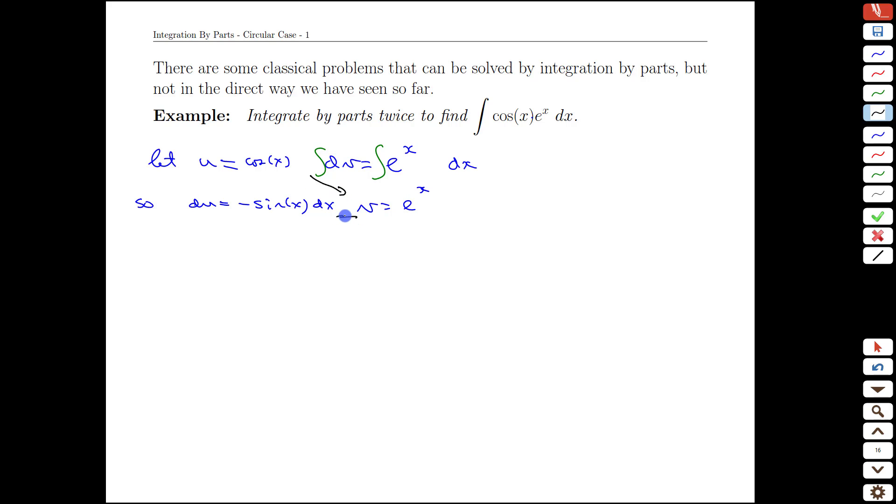Drawing our lines to remind ourselves of the formula. And we call our integral over all I for simplicity, so we don't have to keep copying it. Our integral is equal then to u times v, cos(x) e^x, minus the integral of e^x times negative sine of x dx.